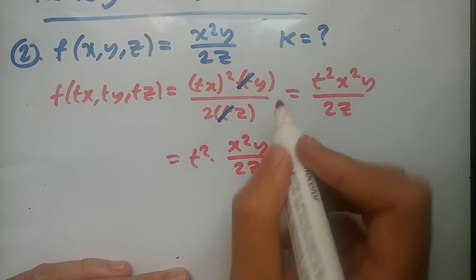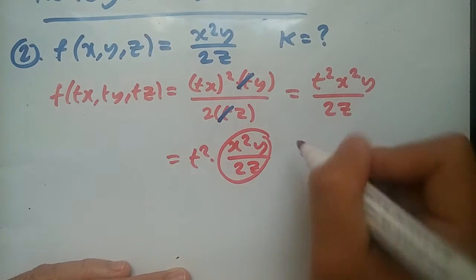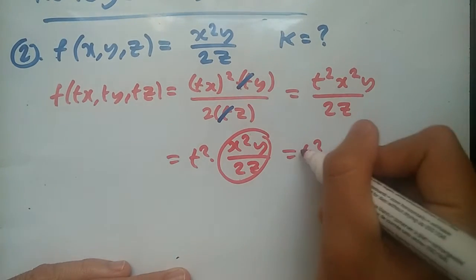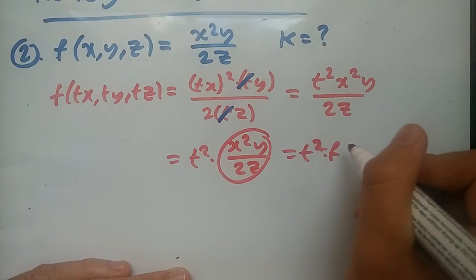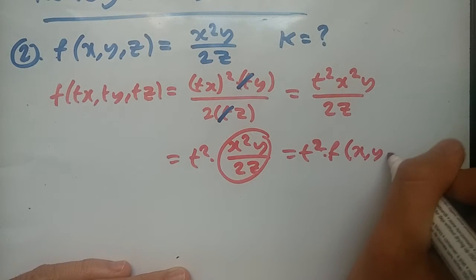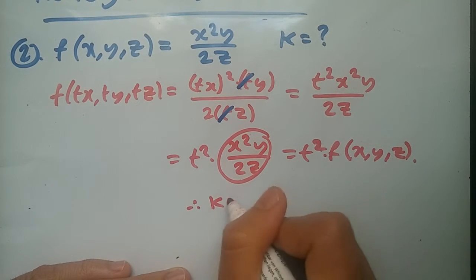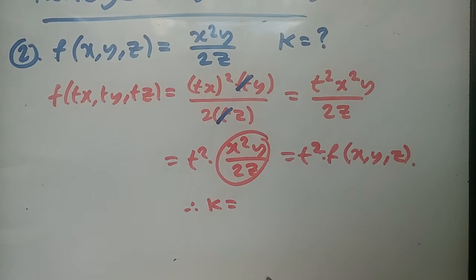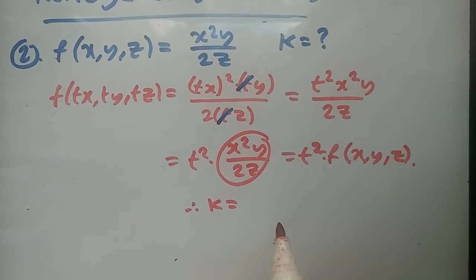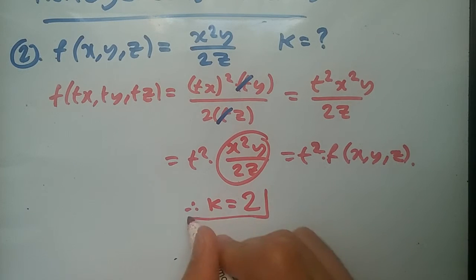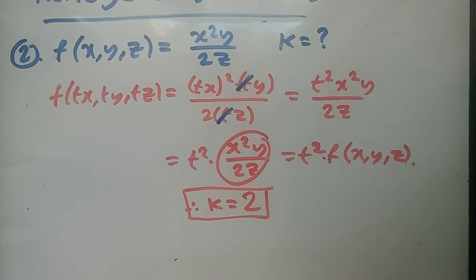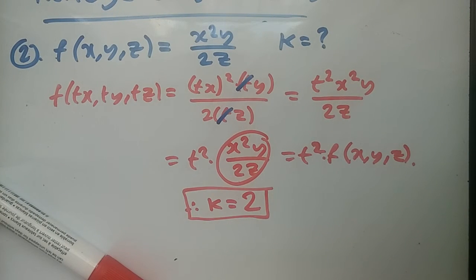And yes, of course it's easy. This function is this function. So this is t squared times our original function f(x, y, z). And yes, this would mean that k has, this function has the degree of homogeneity of 2. And that's it. Easy kind of questions and I will try and show some proofs for the next ones. Hope this helps and see you guys very soon.